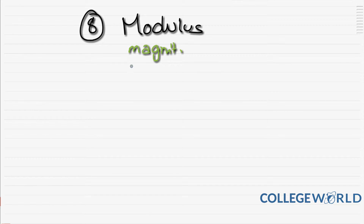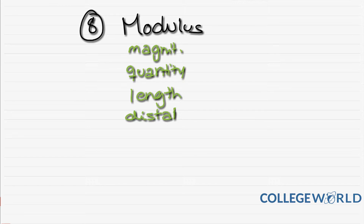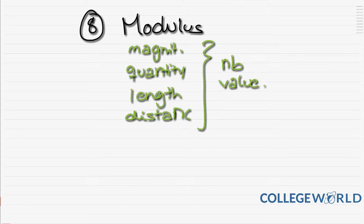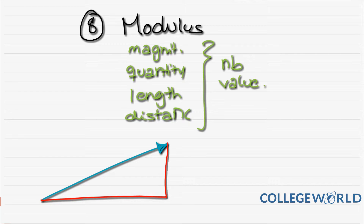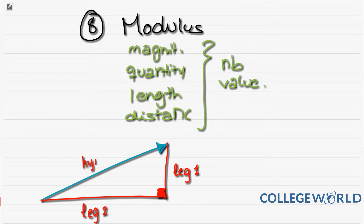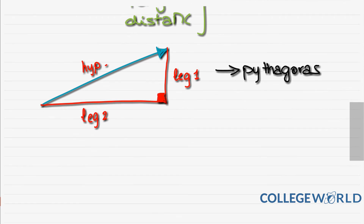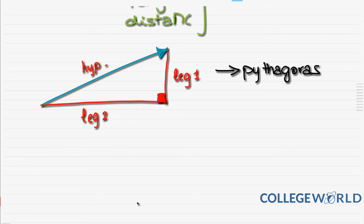That sums up the seventh property on position vectors. Our eighth property is the modulus, also known as magnitude, quantity, length, or distance — anything that gives a certain numerical value. For any vector with an i-component and a j-component, since those two are perpendicular, they form a right triangle, and we can calculate the hypotenuse using the Pythagorean theorem.